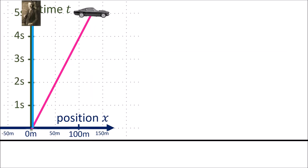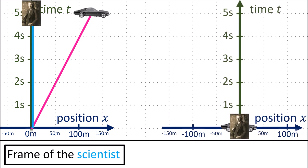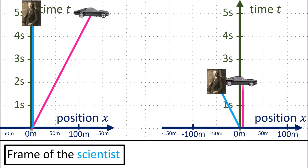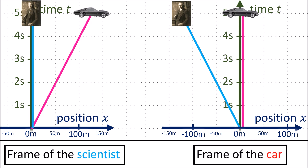Along with the road and the entire neighborhood. So this spacetime diagram — where the scientist has the vertical world line and the car is moving off to the right — is drawn from the scientist's frame of reference. But it would be equally correct to draw a spacetime diagram from the car's frame of reference, where the car is stationary with a vertical world line and the scientist is moving off to the left. Even though these two spacetime diagrams look different, they represent the exact same situation and the exact same physics, just from different points of view.